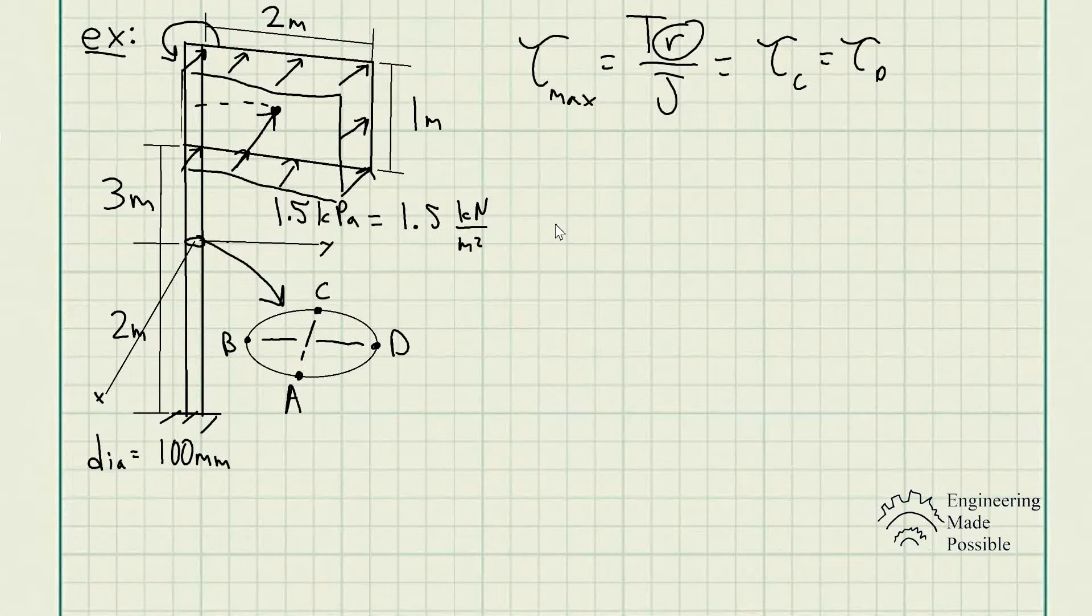We have the given dimensions of the post, 3 meters up to this cross section and up to the floor 2 meters. This is essentially the cross section of the post, which we know is circular with diameter 100 millimeters, and we're asked to find the stress states at point C and point D.